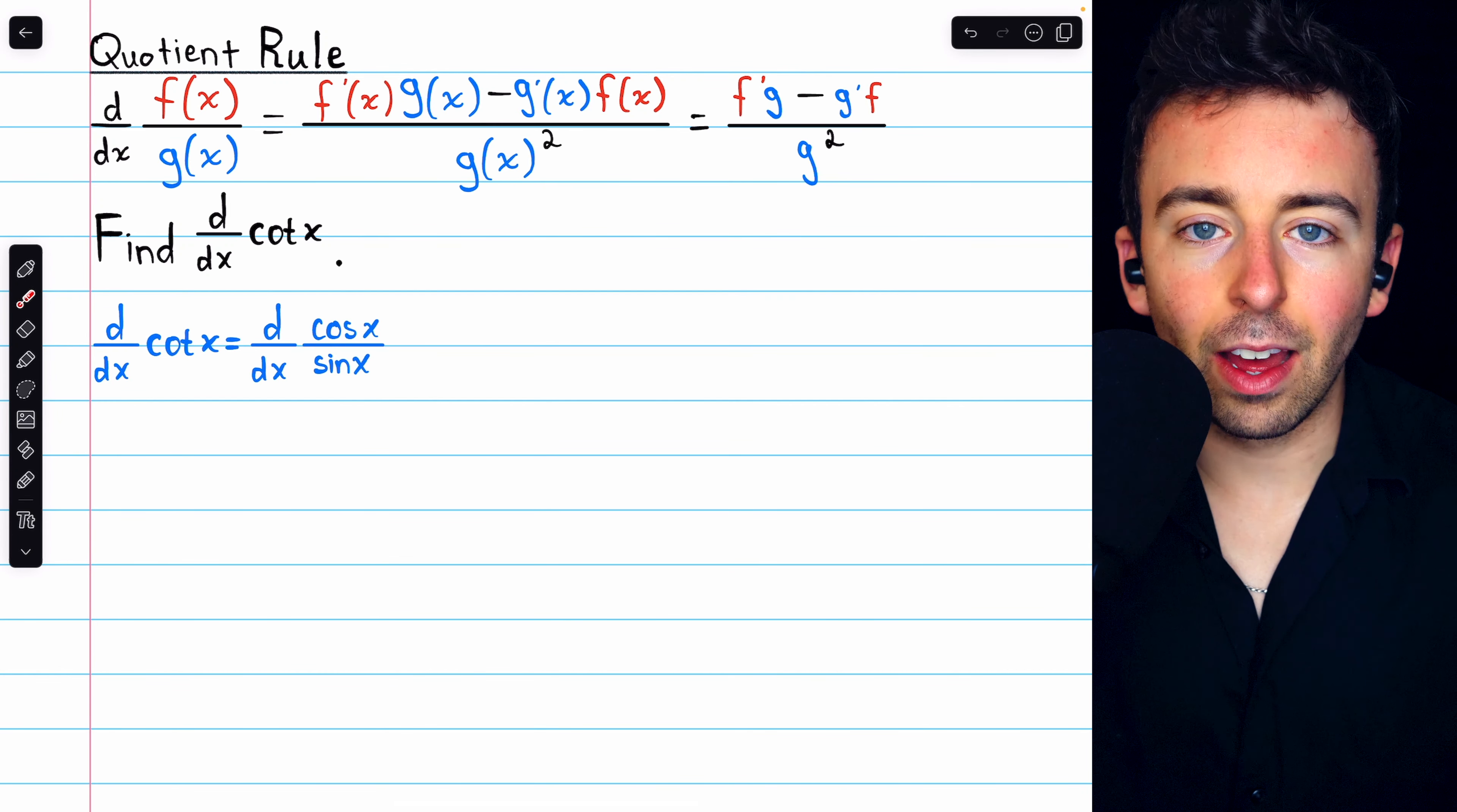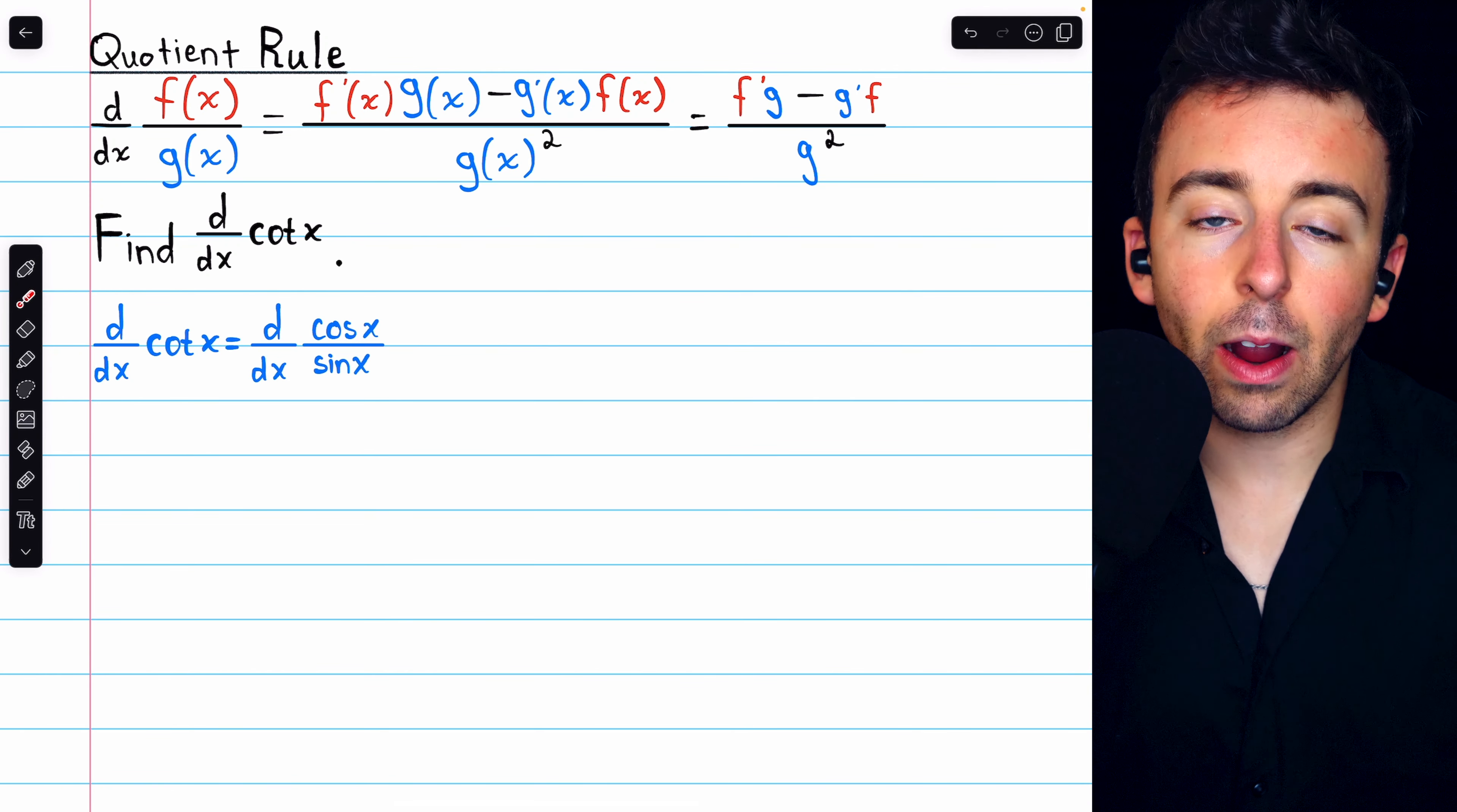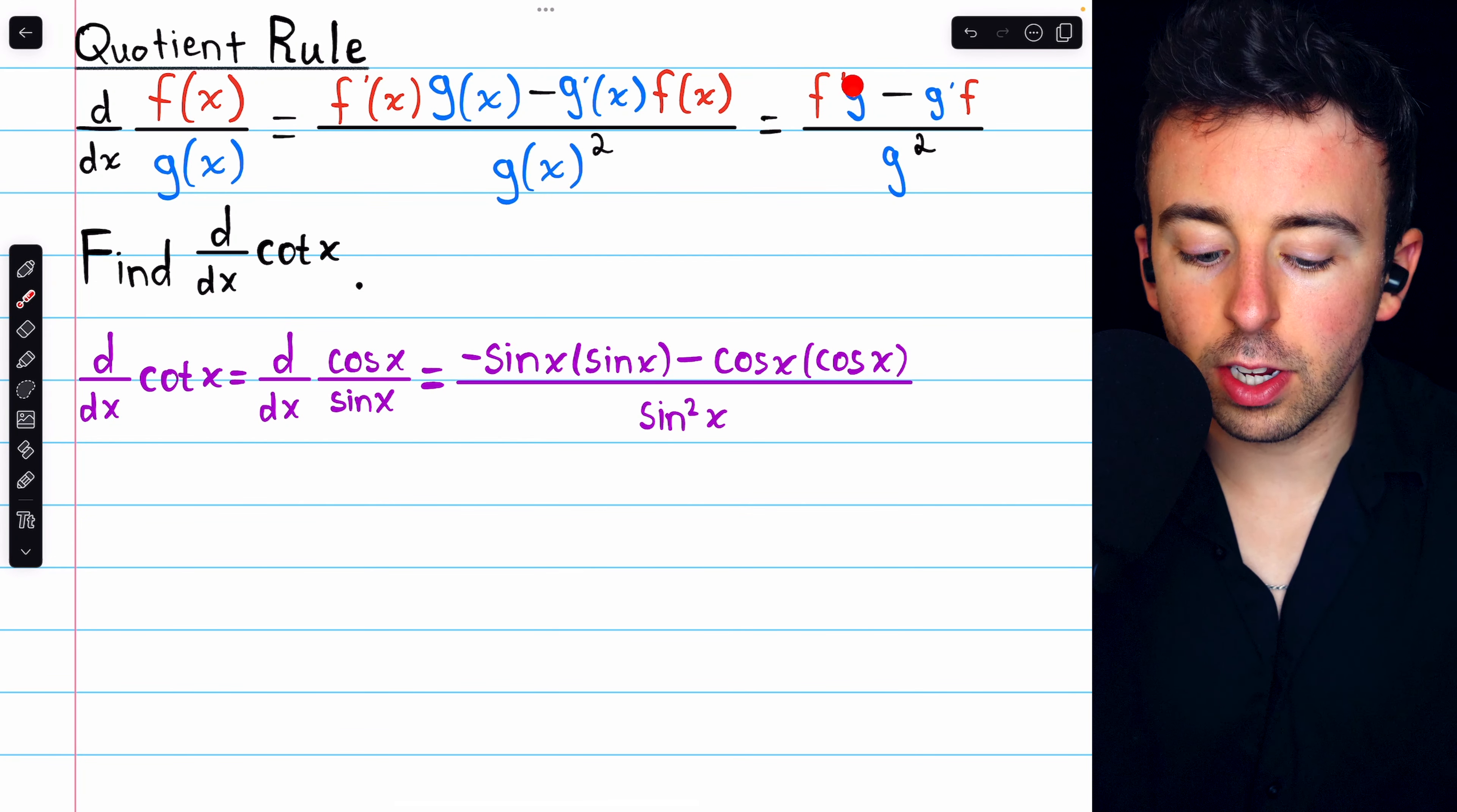Now in this case, our f, the numerator function, is cosine x. And our g, the denominator function, is sine x. We'll begin in the numerator with f prime g.